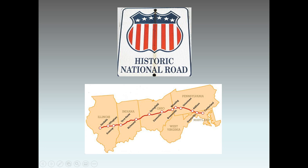The first leg runs from Cumberland, Maryland to Wheeling, West Virginia — right across the mountains. But this road keeps going, all the way to the Pacific Ocean eventually. Today many parts of the national road are part of the interstate highway system.